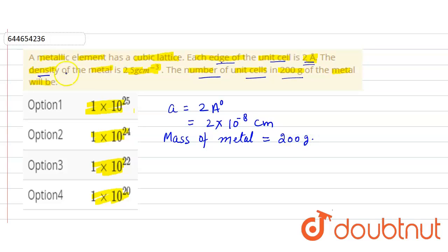Next we have given is density of metal, which is d. We have given is 2.5 gram per centimeter cube.